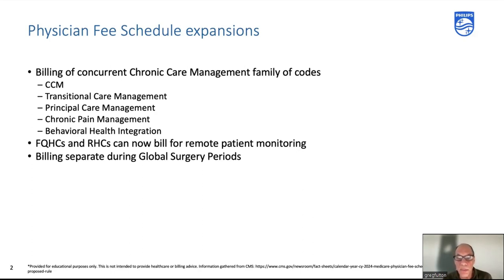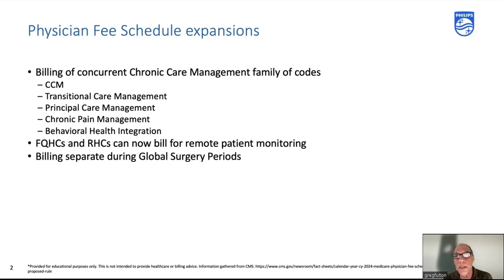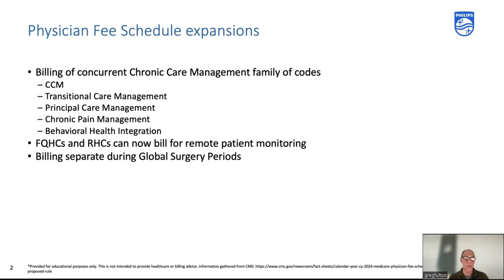The other big expansion: federally qualified health centers and rural health centers can now also bill with remote patient monitoring — same patient, same month. That's been a long time coming, something the industry has been pushing for. The delay was really a matter of how different fee schedules are put together by CMS. The physician fee schedule is fee-for-service; FQHCs and RHCs use more of a prospective payment system. CMS found a way to finally merge these two types of billing together.